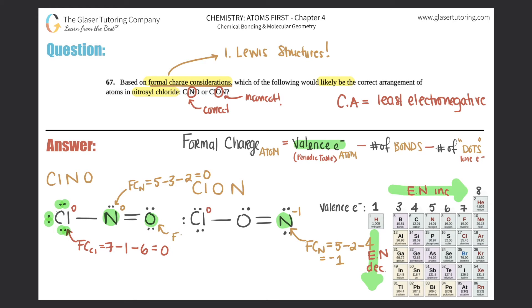This oxygen, formal charge of that would be valence. Oxygen has six. So six valence electrons minus two bonds. So minus two minus four dots. So minus four. Six minus two minus four is zero. So this is also neutral, zero charge.